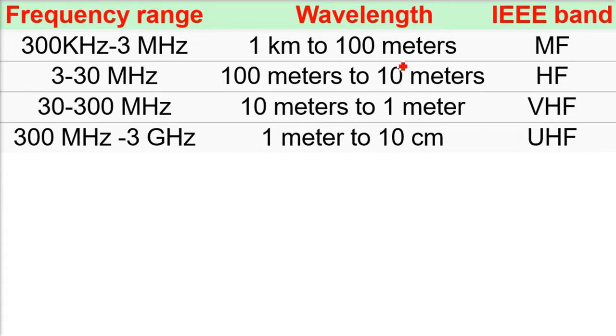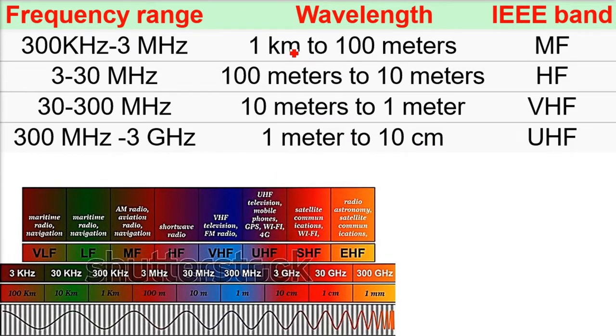The first one is the MF, HF - these are names given to certain bands by IEEE. The medium frequency is 300 kilohertz to 3 megahertz. That is 1 kilometer to 100 meter, this is the wavelength. This is quite high wavelength, this is medium frequency, 1 kilometer to 100 meter.